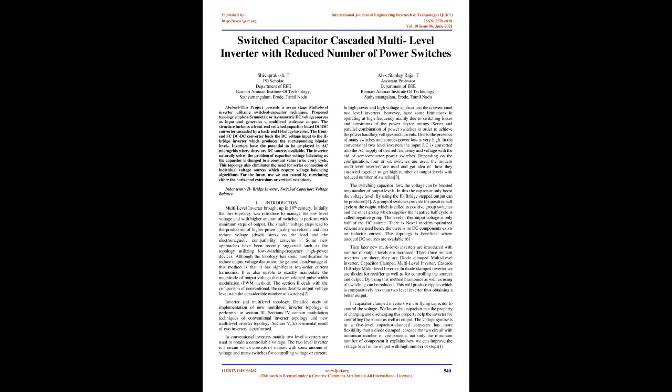Section 2 deals with the comparison of conventional topology with considerable output voltage levels and number of switches to the multilevel inverter topology. A detailed study of implementation of the new multilevel inverter topology is performed in section 3. Section 4 contains modulation techniques of conventional and new multilevel inverter topology. Section 5 presents experimental results. In conventional inverters, mainly two-level inverters are used to obtain a controllable voltage, consisting of sources with some voltage and many switches for controlling voltage or current.